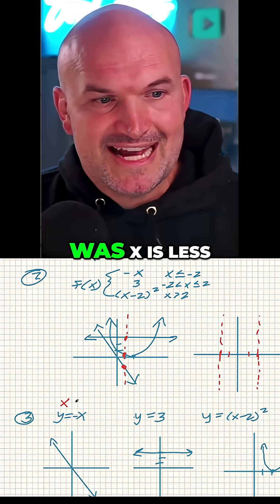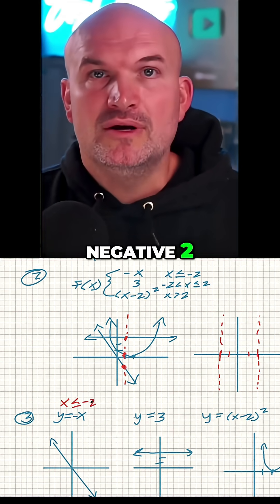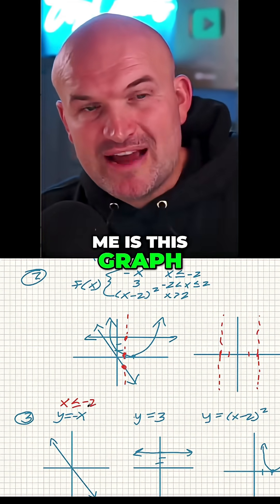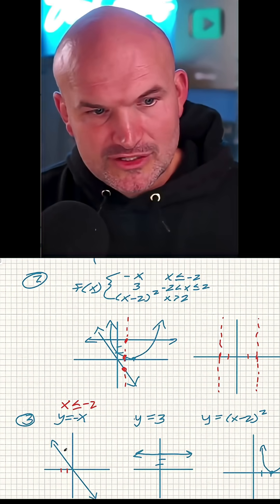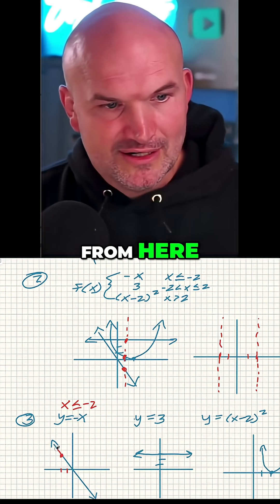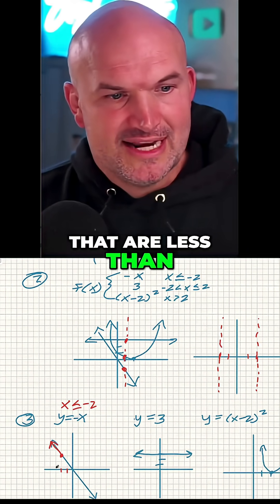Now again, the restriction for this was x is less than or equal to negative two. So what that's telling me is this graph is only defined for x values that are less than negative two. So it's only defined from here and then for values that are less than negative two, right?